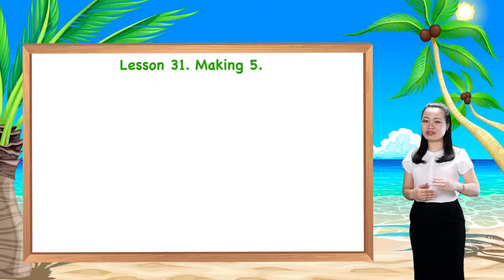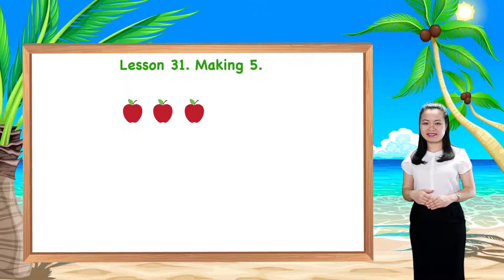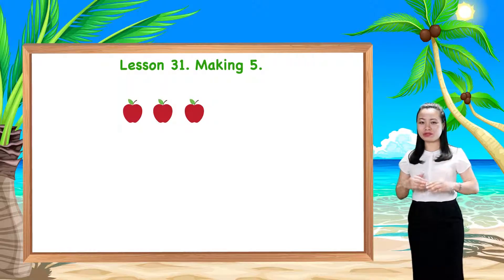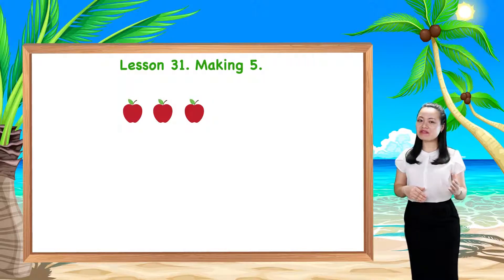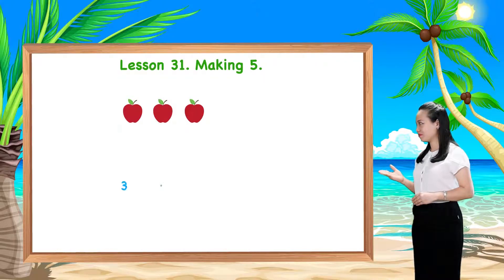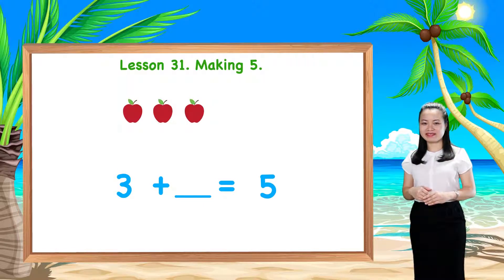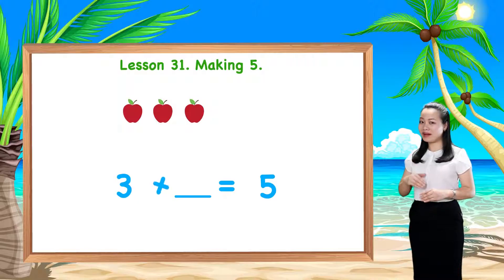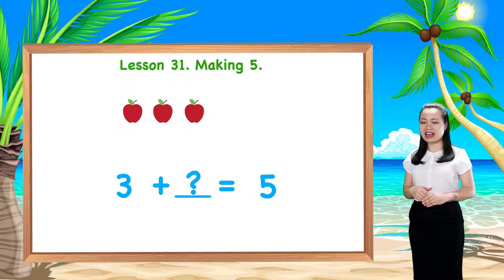Suppose we have three apples, how many more apples do we need to have a total of five? We write in numerals. We say three plus something equals five. There's an unknown number here.